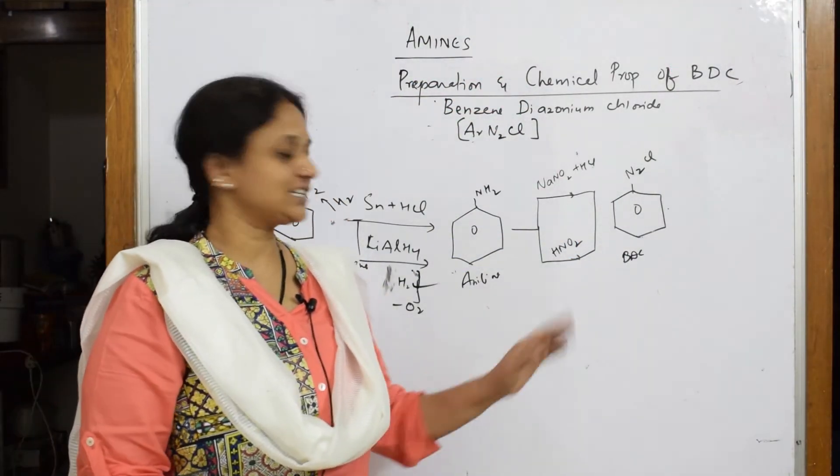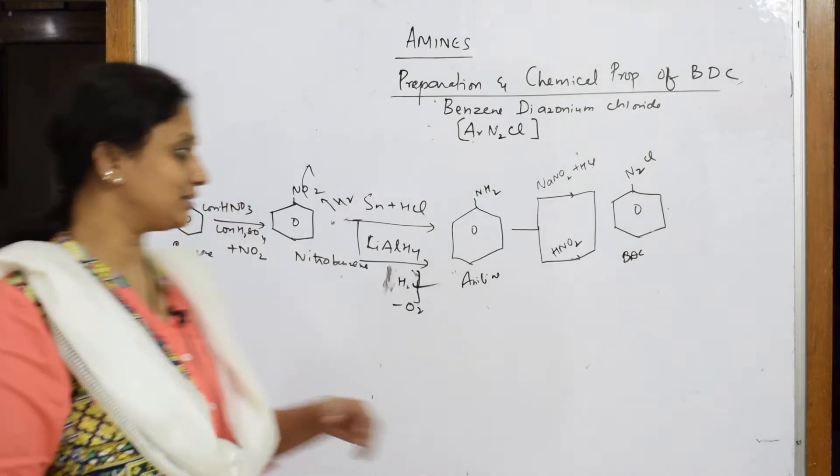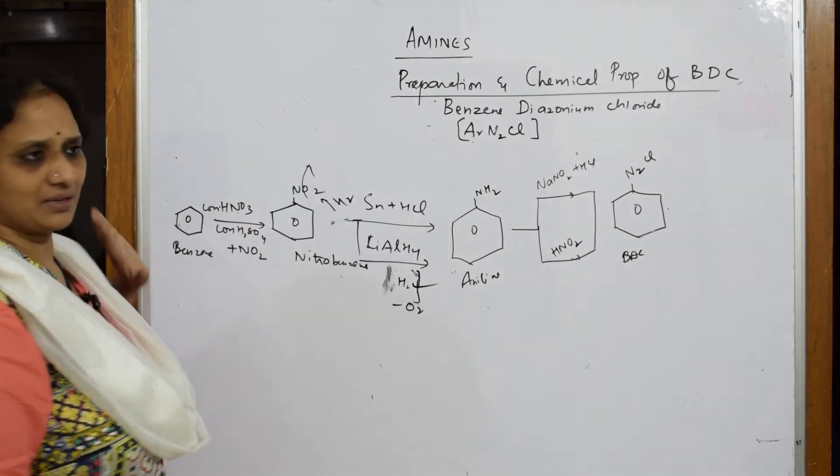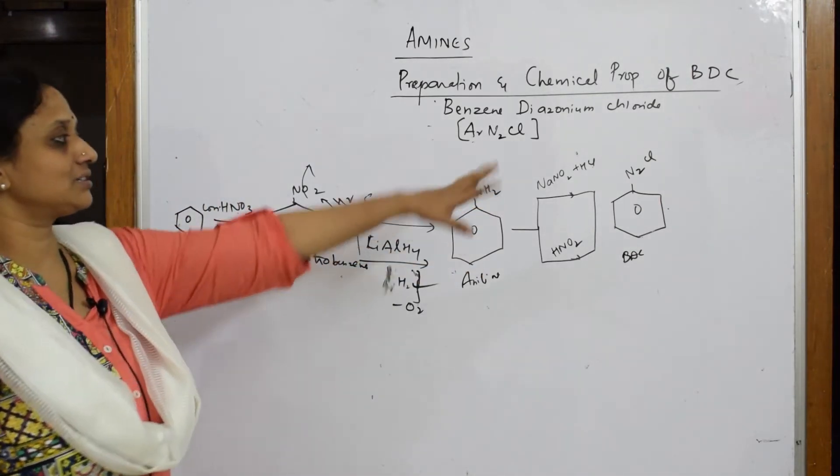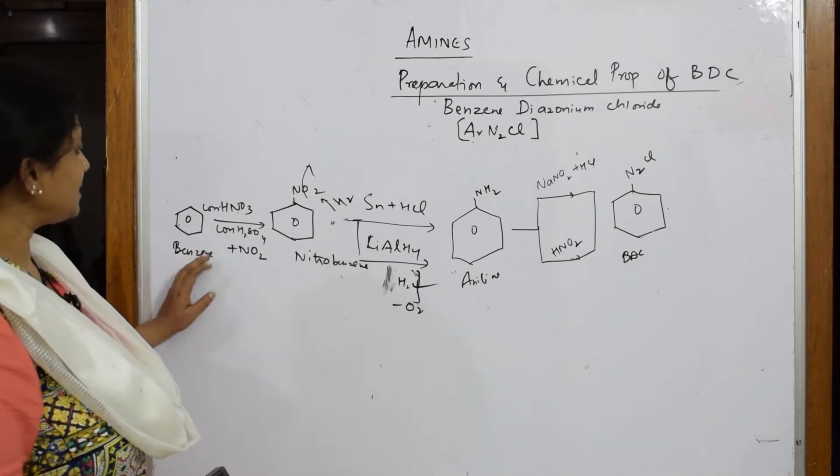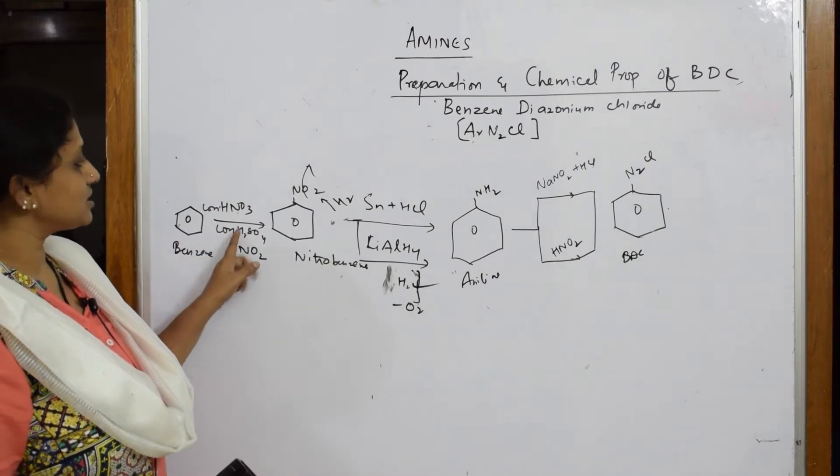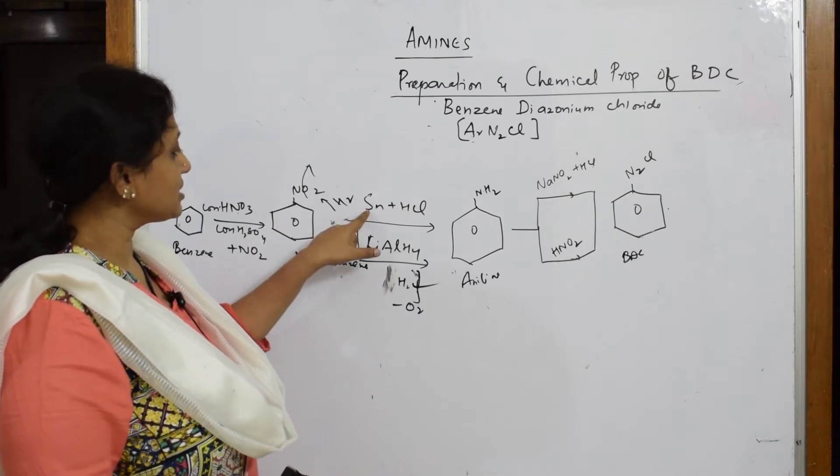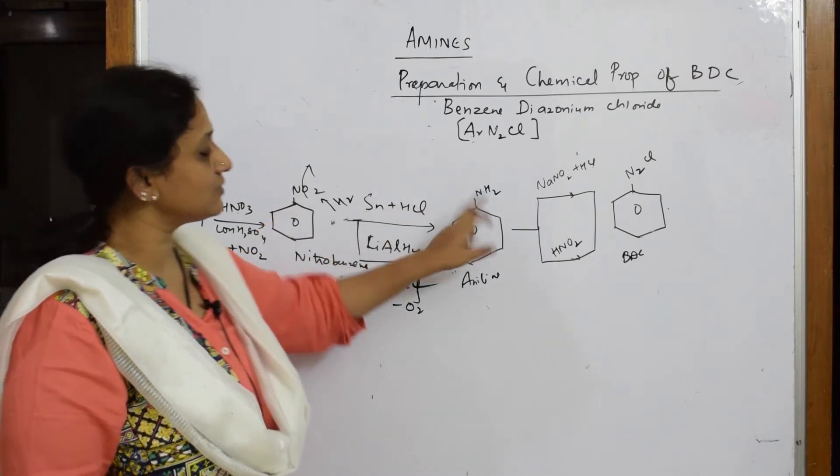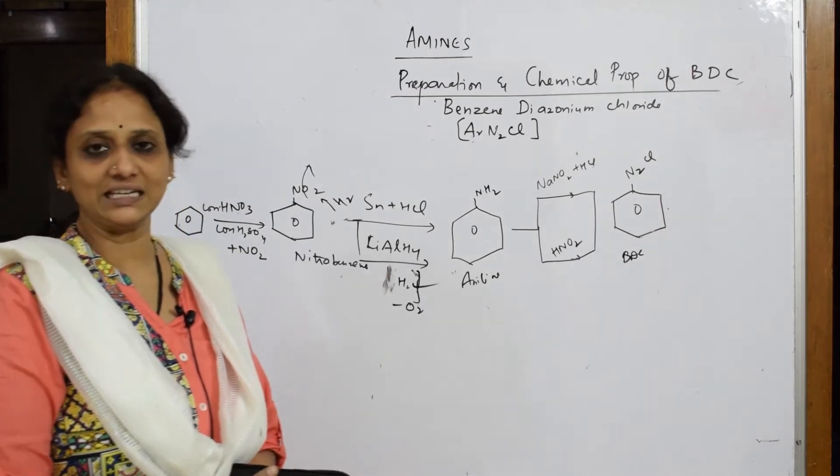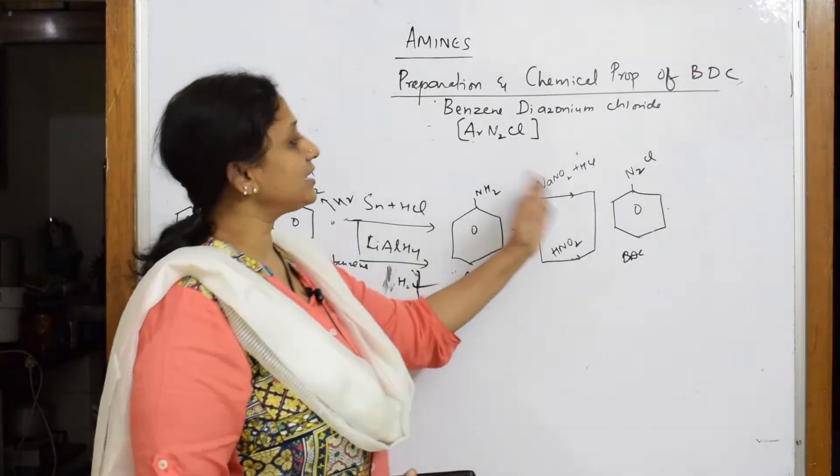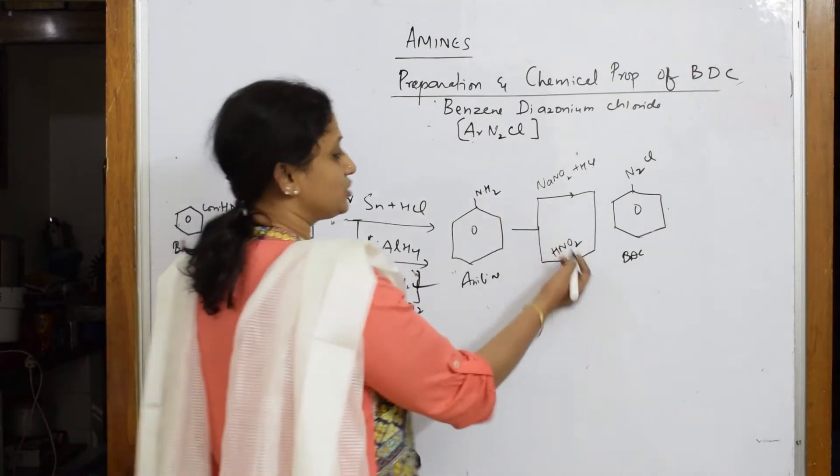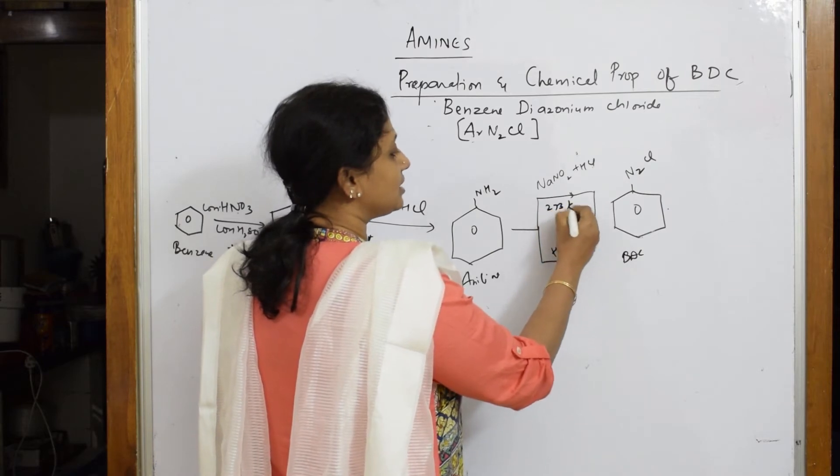Now we're going to see the next set of reactions of BDC. The process is the same. Benzene on nitration with the nitrating mixture gives nitrobenzene. Further, when using a reducing agent, nitro gets converted to amines, giving aniline. When I treat with NaNO2 and HCl or HNO2 at 273 Kelvin, I'm going to get BDC. That's the standard reaction.